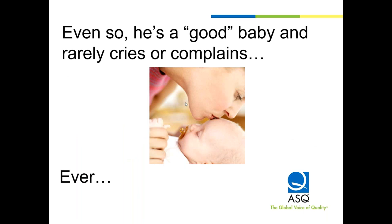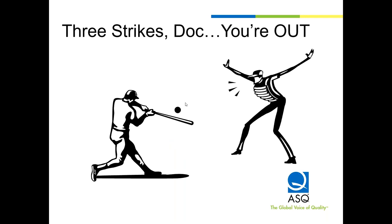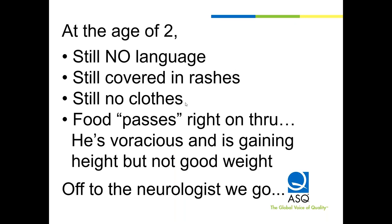Throughout all that, he didn't cry, didn't fuss — there was not a lot of outward verbalization going on. He was just a great little kid that didn't like to wear clothes. By the age of two, we had no language. When Adam was younger — 12, 14, 16 months — we did have language, but that all went away around the 17-18 month timeframe. Everything he had went lights out silent. He was still covered in rashes, very hard to get clothes on, and food passed right through him.